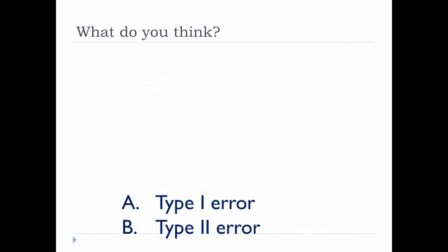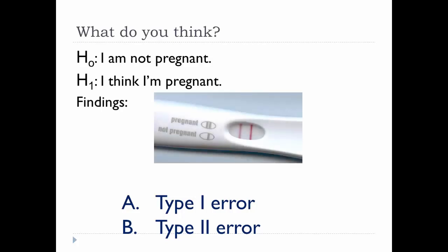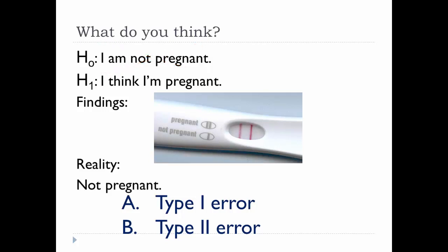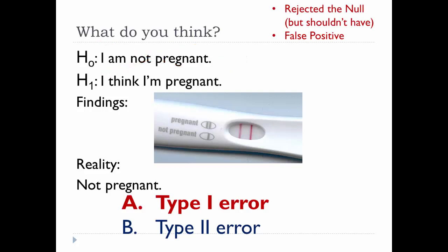Let's try another. You think you might be pregnant. The null hypothesis would be that you are not pregnant, while the alternative hypothesis would be that you are indeed pregnant. You do an experiment using a home pregnancy test, and the results come back supporting the alternative hypothesis — so you reject the null hypothesis. But if, in reality, you are not pregnant, what type of error would you be committing? That would be a Type 1 error, because you rejected the null hypothesis when in fact you should have accepted it. The test was a false positive, and you'll have to give back all those cute Disney newborn clothes you just bought.